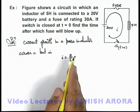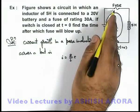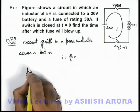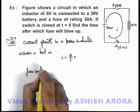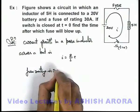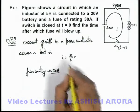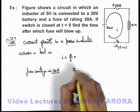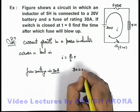And we are required to find the time after which the fuse will blow, and we know here fuse rating is 30 ampere, that is it can support a current up to 30 ampere, so we can calculate the time after which the current will become 30.